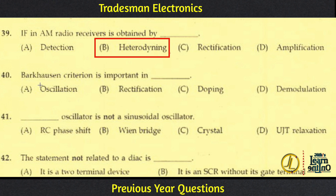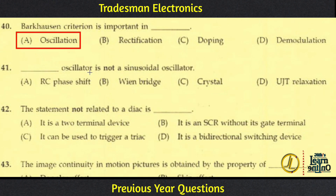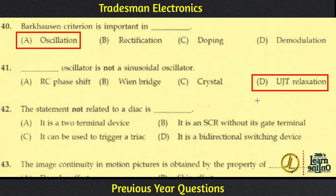Which oscillator is NOT a sinusoidal oscillator? RC phase shift, Wien bridge, and crystal oscillators all generate sine waves. However, a UJT Relaxation Oscillator generates a sawtooth waveform, so it is NOT a sinusoidal oscillator.